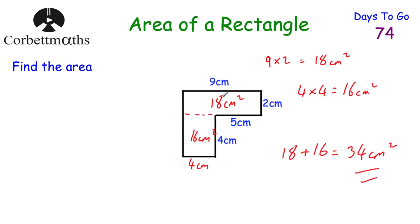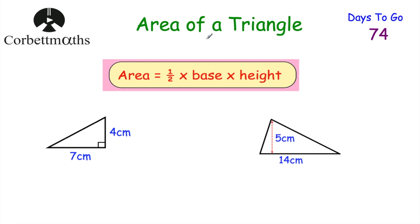We've had a look at finding the area of a rectangle — now let's look at finding the area of a triangle. To find the area of a triangle, we do half the base multiplied by the height, or the base times the height divided by 2. You can half the base then times the height, half the height then times the base, or do base times height and then halve it.